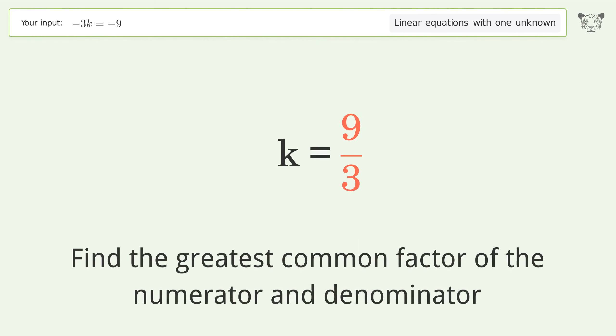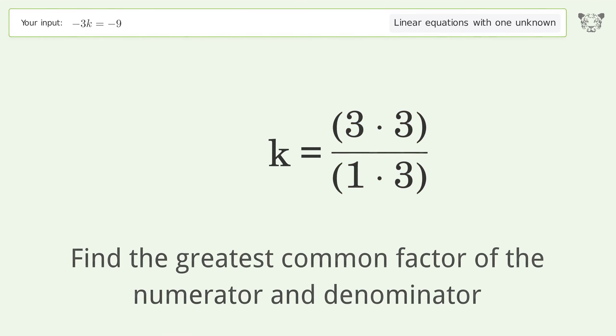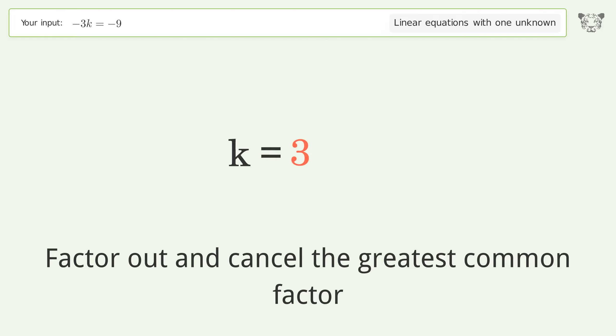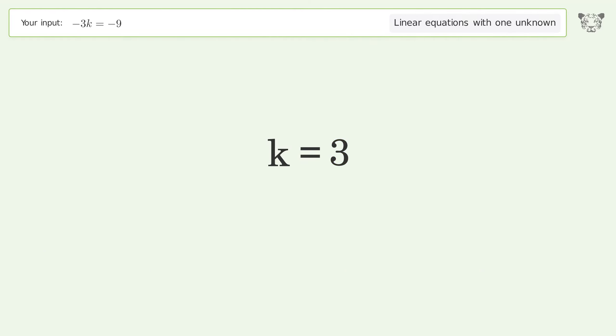Find the greatest common factor of the numerator and denominator. Factor out and cancel the greatest common factor. And so the final result is k equals 3.